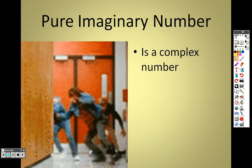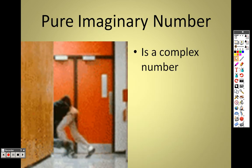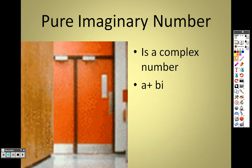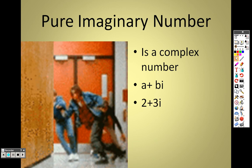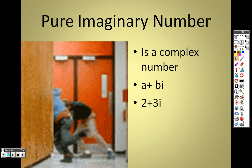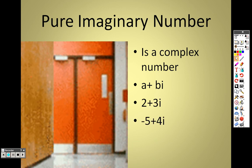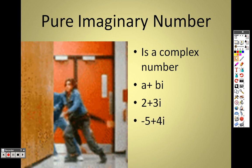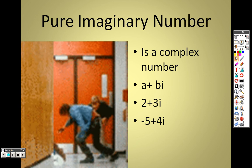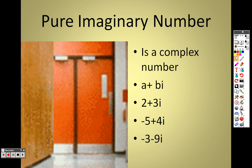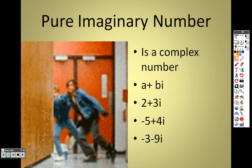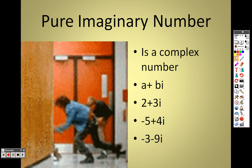A pure imaginary number has the same form as a complex number — that's like a + bi. So 2 + 3i is a pure imaginary number. Negative 5 + 4i is a pure imaginary number. Negative 3 − 9i, that's a pure imaginary number.